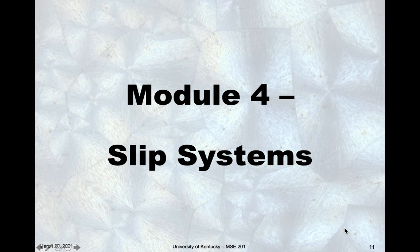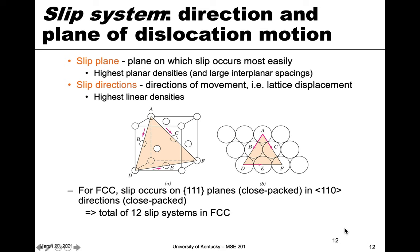I want to continue looking at the slip process and talk about what we call the slip systems. A slip system is just the direction and the plane for which dislocation motion occurs. The plane that separates the top and bottom half of the edge dislocation, for example, would be our slip plane — that's where the actual motion of planes going past each other happens. This is the plane on which slip occurs most easily.